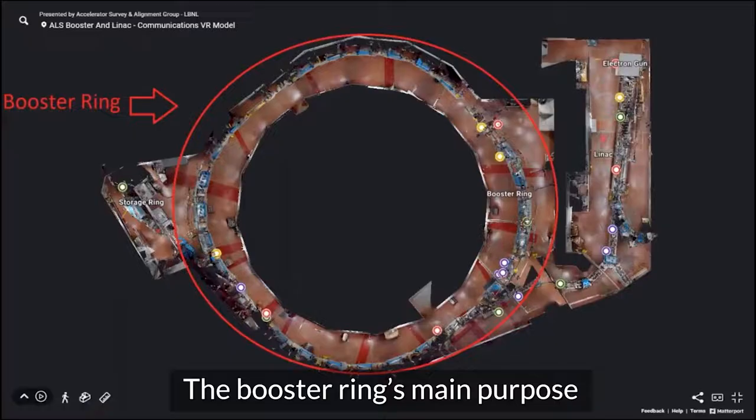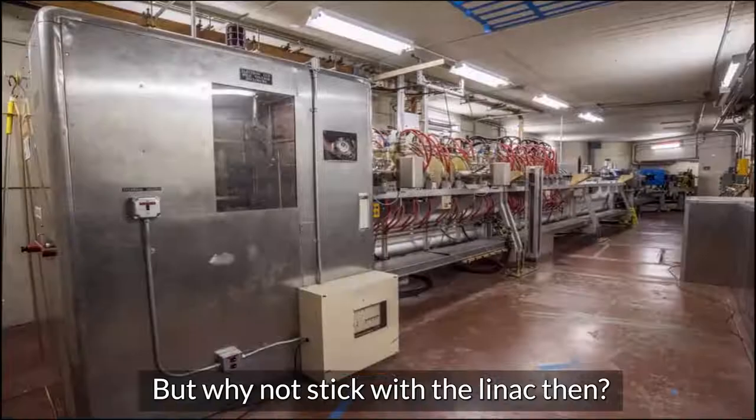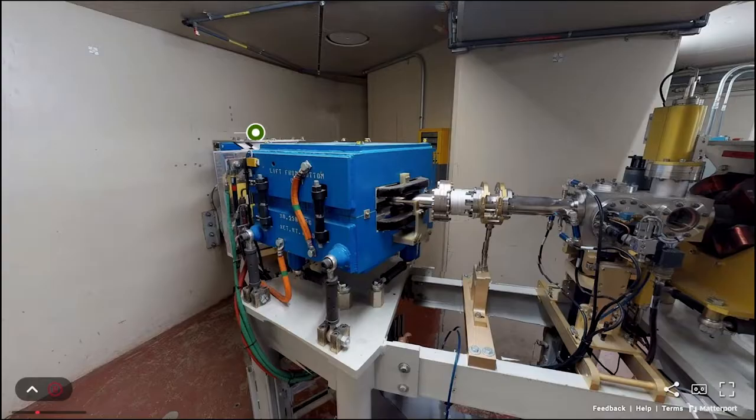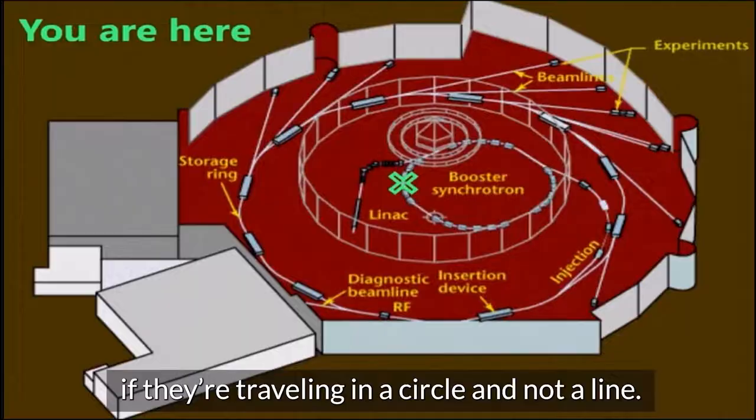The booster ring's main purpose is to speed up the electrons, but why not stick with the LINAC then? We've just established that it does this, right? The answer is simple: it's just more efficient to speed up electrons if they're traveling in a circle and not a line.